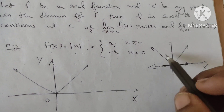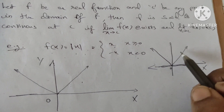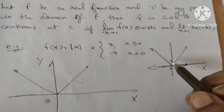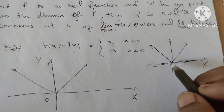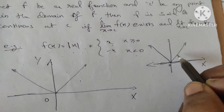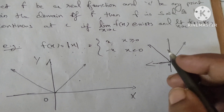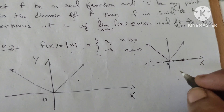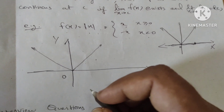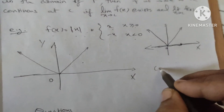So here we can see: while drawing this graph, there is no need to lift the pen. We can draw the graph continuously. That is continuity — I will explain the meaning of continuity this way.